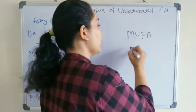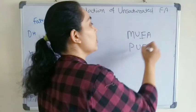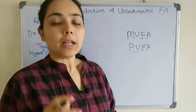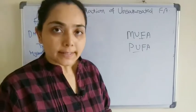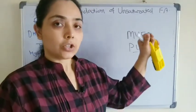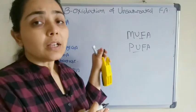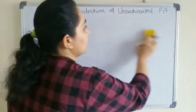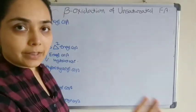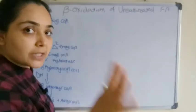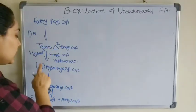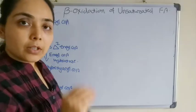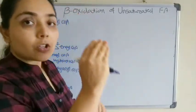Unsaturated fatty acids are of two types: monounsaturated fatty acid (MUFA) and polyunsaturated fatty acid (PUFA). Let us see how beta oxidation of these fatty acids differs from that of saturated fatty acid. There are four major steps to remember, especially for MCQs: dehydrogenation, hydration, dehydrogenation, and thiolysis.